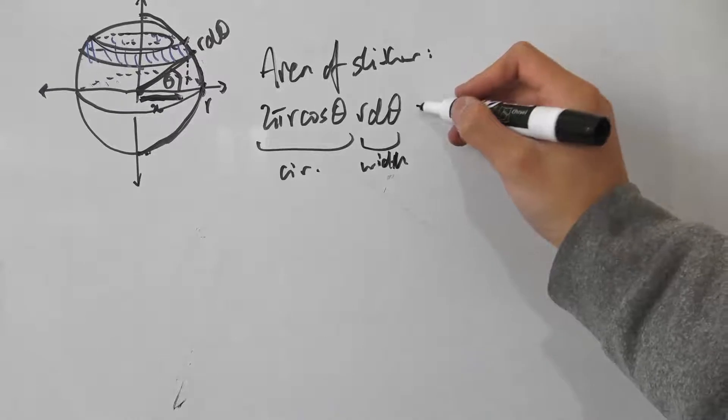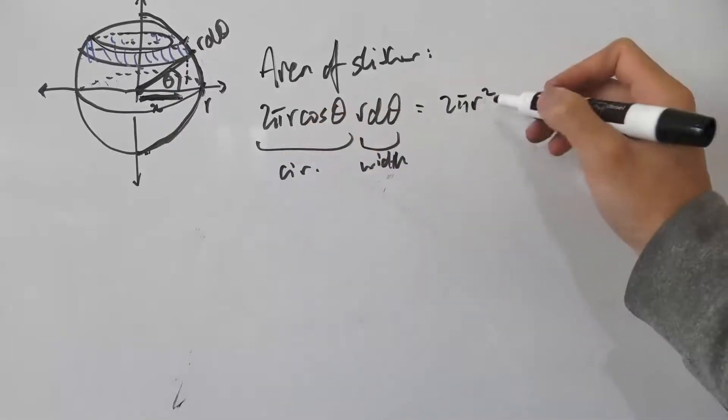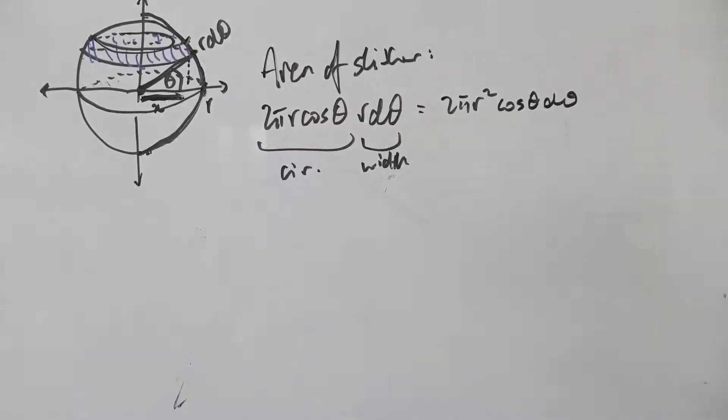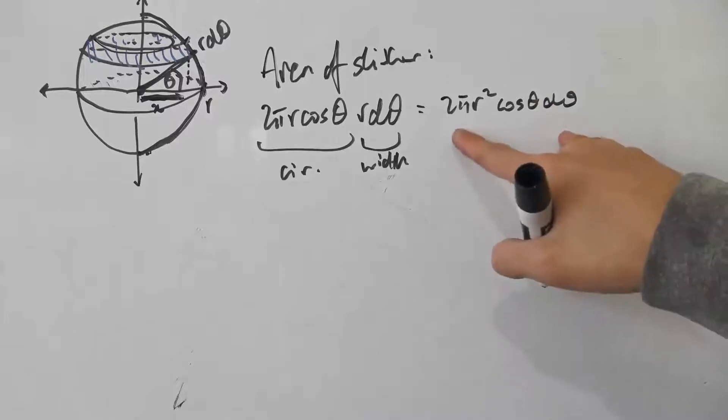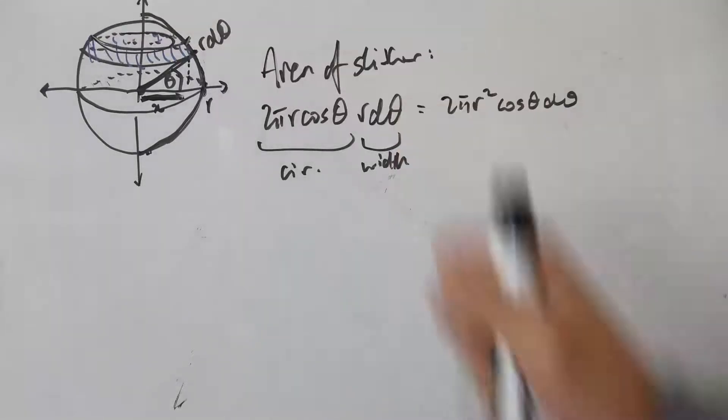This equals 2πr² cos θ dθ. This is good because we actually have an expression for each of these slithers here.